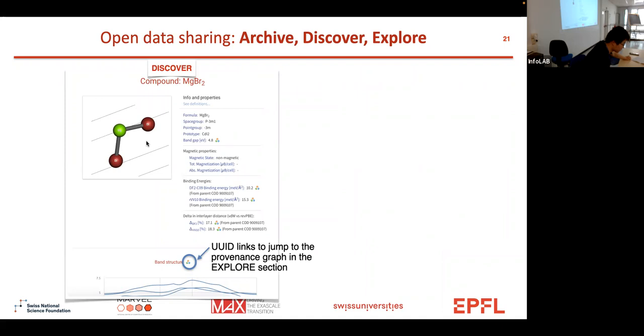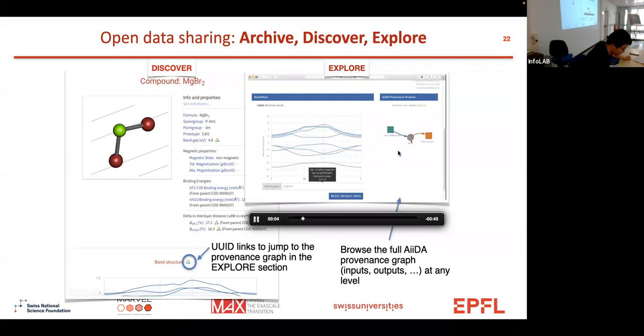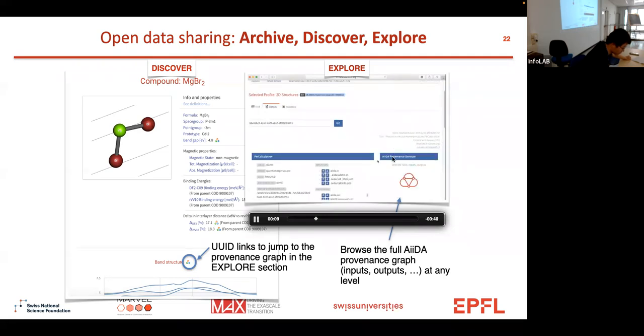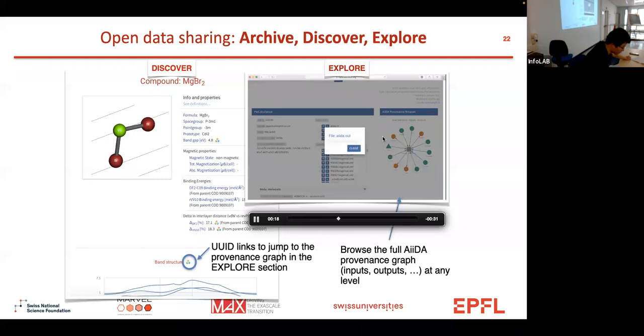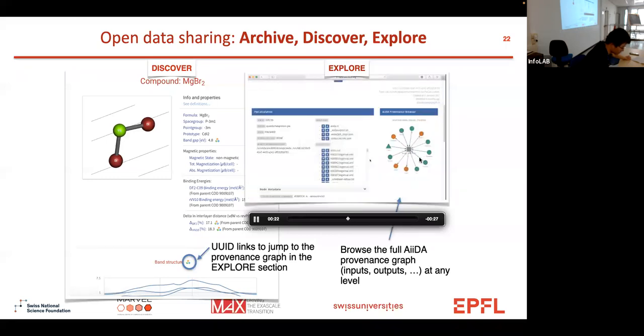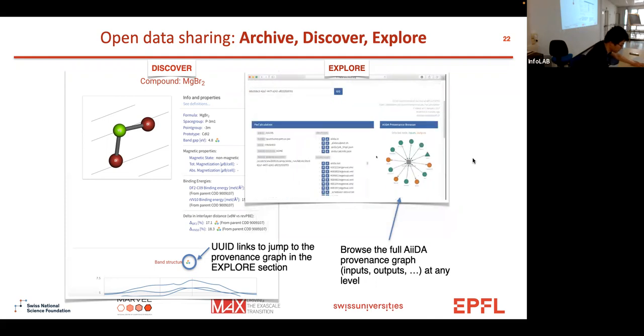For example, for this material in the paper, from this band structure you can click this AiiDA icon and this will lead you to the provenance graph. Here we have a small video clip to show you the power of this provenance. We start from this band structure and we can find its parent Quantum ESPRESSO calculations. We can find all its inputs and outputs. For example, here we can find this input file and here this is the output file. We can find this input structure, visualize the crystal structure, and also download the crystal structure. Materials Cloud provides a platform for you to share your data.